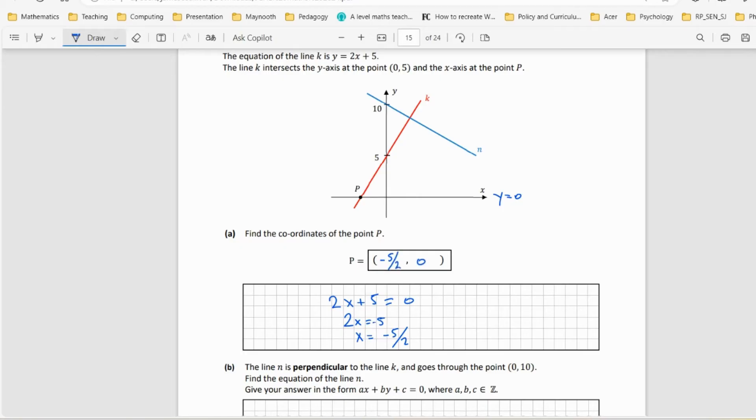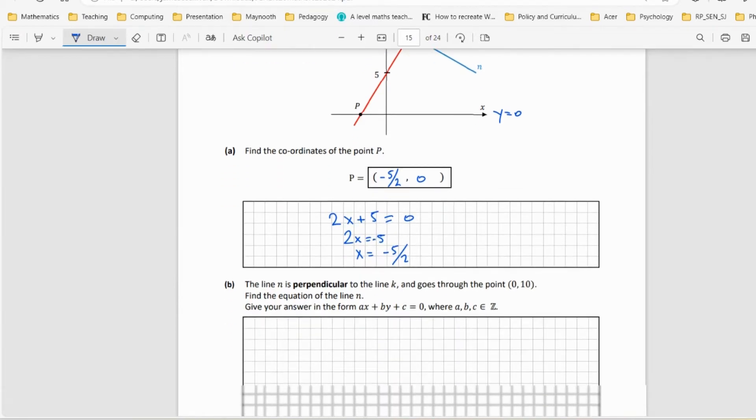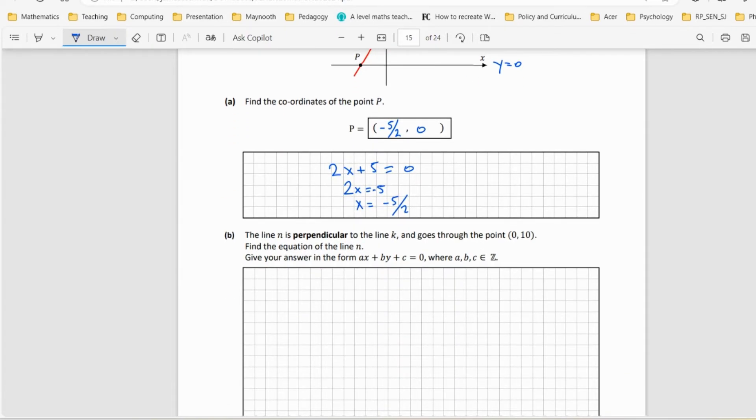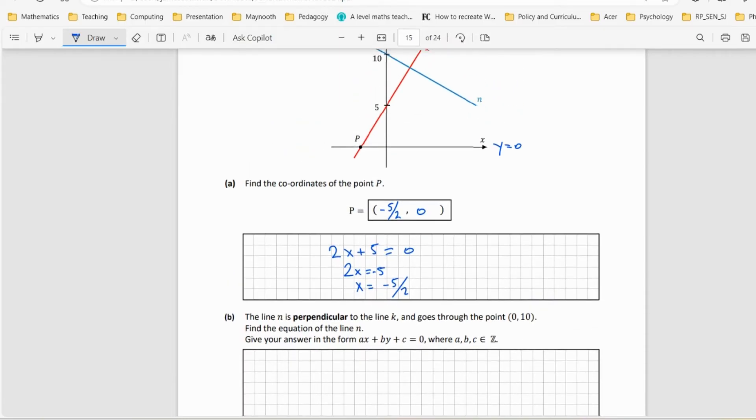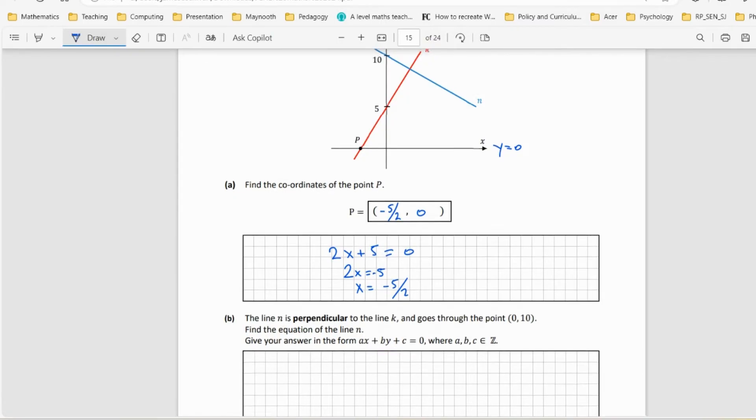The line n is perpendicular to line k and goes through the point (0, 10). We need to find the equation of line n.